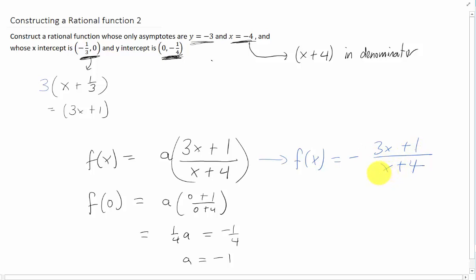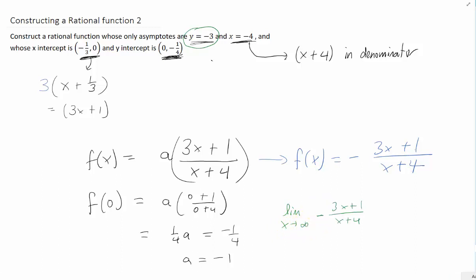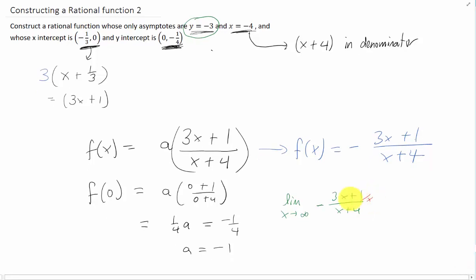Now we really have nothing left at our disposal to change here. So it better be the case that our horizontal asymptote of this function here is negative 3. Let's take a limit as x goes to infinity of our function. Well you'll notice that we get infinity in the numerator and infinity in the denominator. So what we typically do is we divide every single term by x to the highest power that appears in the rational function. We can simplify a bit and we get the limit as x goes to infinity of this thing right here. And if we take this limit you'll notice that these two terms go to 0 and we just get negative 3 over 1 which is, thank goodness, negative 3.